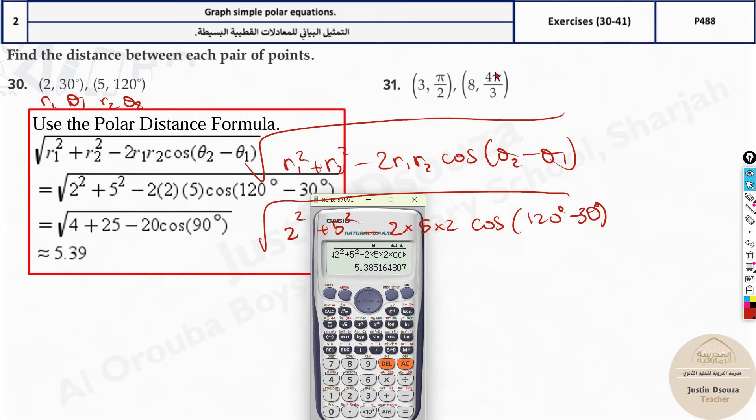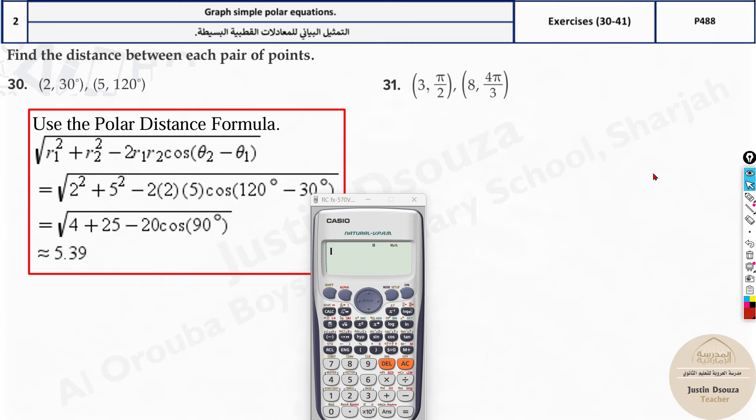Here you can use radians as theta directly, but then you will have to press shift mode and then change it to radians. But what I would honestly suggest you is convert this to degrees. Pi by 2, how much is it? 180 by 2, it's 90 degrees, right? Pi is 180 divided by 2, it's 90 degrees. Take it as 90.